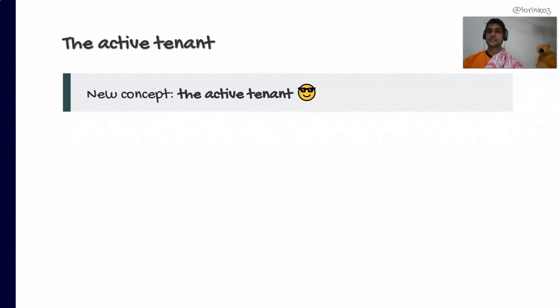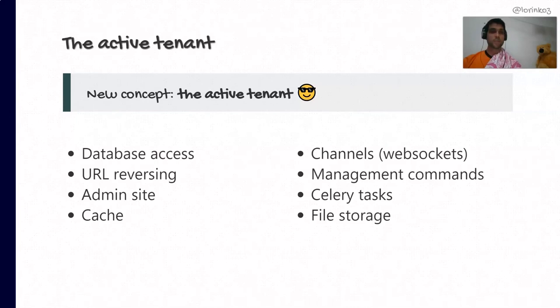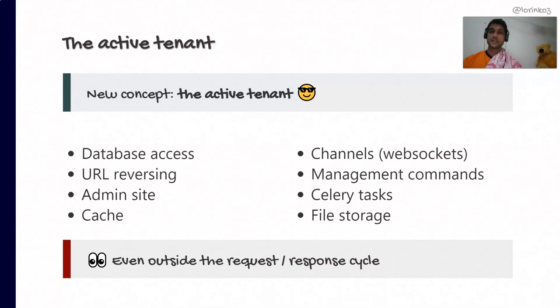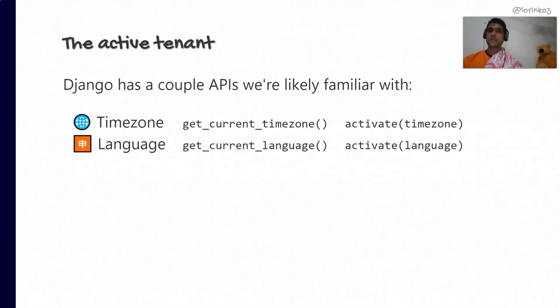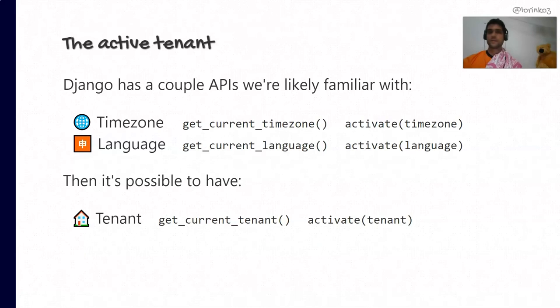This is where we have this new concept — the active tenant. The framework needs to operate within the scope of a tenant considered to be the active tenant at the time of every single operation, be it database access, URL reversing, admin site, cache, channels, etc. But notice that things like management commands and Celery tasks fall outside the request-response cycle, so we don't have a request object to interrogate for the active tenant — we have to make this work even without a request object at hand. Django has APIs where something gets activated and retrieved without a request object — like set timezone and language — so there's nothing stopping us from doing the same with 'get_current_tenant' and 'activate_tenant' functions.